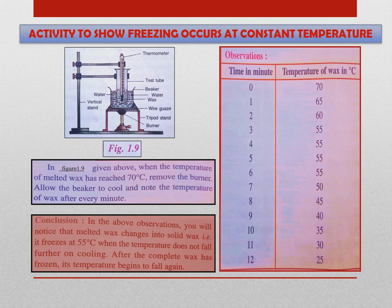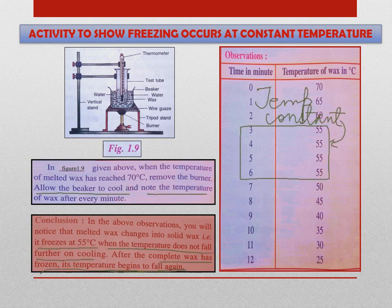Next, there is an activity to show that freezing occurs at constant temperature. In the previous experiment, we heated the wax till 70°C. Now we will remove the burner and allow the beaker to cool and note down the temperature. We will observe that initially the temperature decreases, but later on it becomes constant. Then all the wax freezes and then again the temperature begins to fall. This temperature, 55°C, is known as the freezing point of wax. You can see that the melting point and the freezing point of wax are both 55°C.